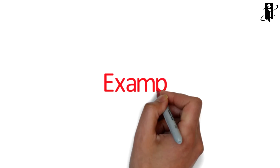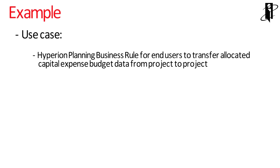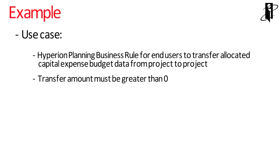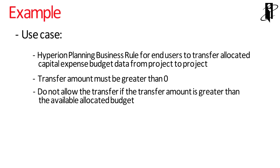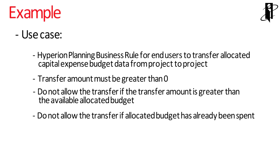Now let's see an example. In this particular use case, we have a Hyperion Planning business rule that an end user runs to transfer budgeted dollars from project to project. There are certain rules that must be met or we don't want to allow this business rule to execute. When the user enters in the budget transfer amount, it must be greater than zero. We also don't want to allow the budget transfer to take place if the amount being transferred is greater than the allocated budget from the source project, or if the allocated budget has already been spent.